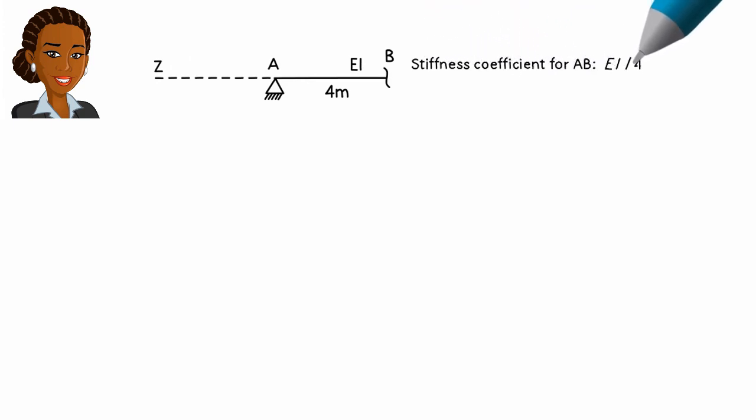To apply this approach to an end joint of a structure, we define an imaginary member attached to the other side of the joint, like this. We then assign a stiffness coefficient to that imaginary member.